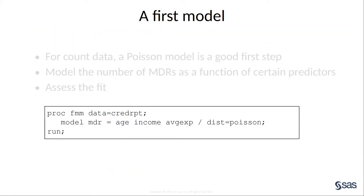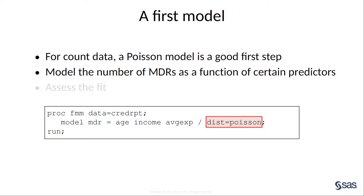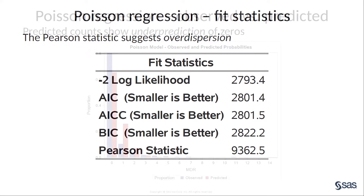Now you can start with the actual modeling. Because these are count data, you can use the Poisson model. You'll use the explanatory variables in the data to predict the number of MDRs, and you'll also assess the fit of this model. You see here the fit statistics for the Poisson model. The last fit statistic in the table, the Pearson statistic, should be close to the sample size. Recall that was 1,319, and it is much larger than that. This indicates over-dispersion in this model.